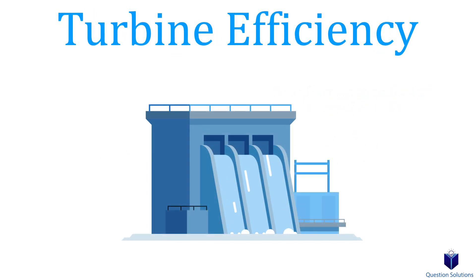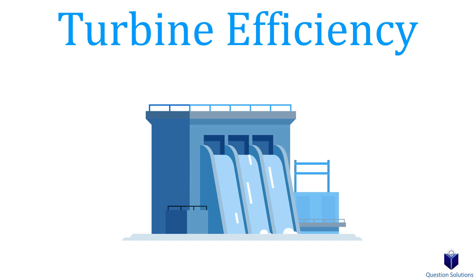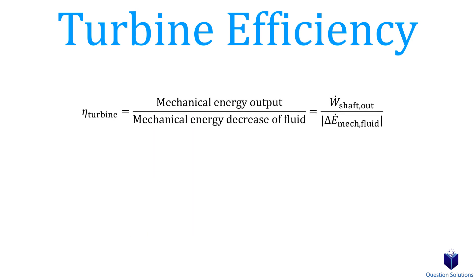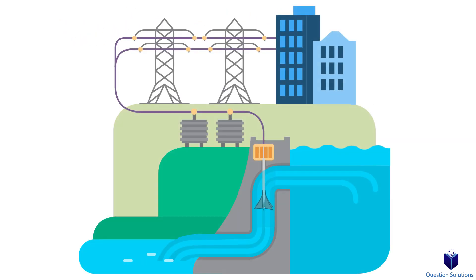Now let's think about the opposite: extracting mechanical energy from a fluid using a turbine, where the rotating shaft drives a generator. Turbine efficiency is written as the mechanical energy output divided by the mechanical energy decrease of the fluid. This makes sense — we're taking energy away from the fluid and transferring it to a shaft. At 100% efficiency, there would be a perfect conversion between shaft work and the mechanical energy of the fluid.